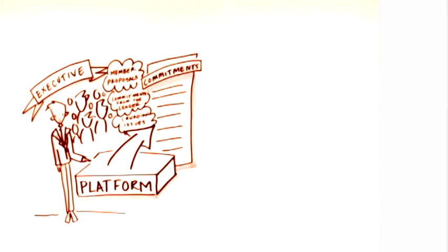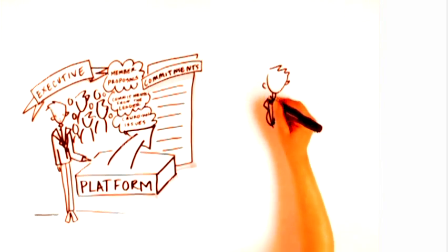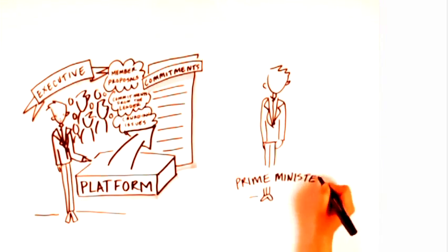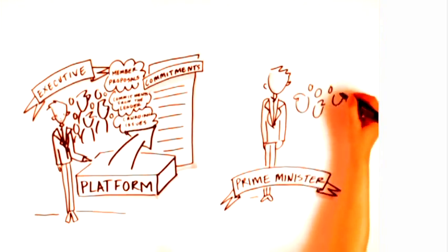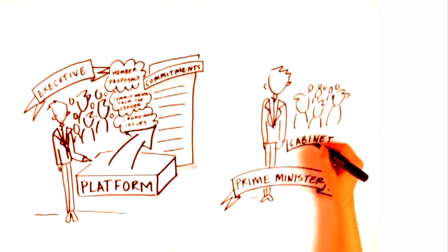If a political party is successful in an election, the leader of the party becomes the Prime Minister. The Prime Minister then chooses some of the elected members from the winning party to join cabinet and form a government.